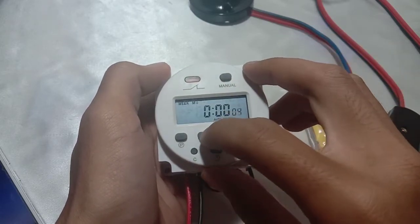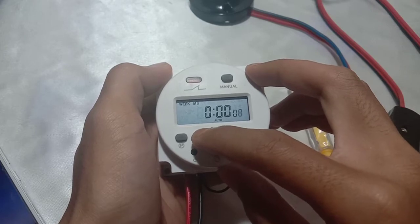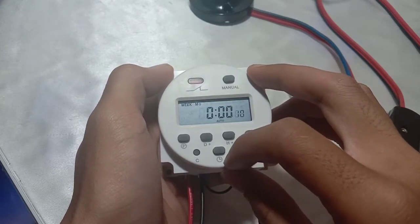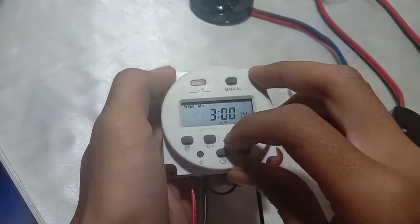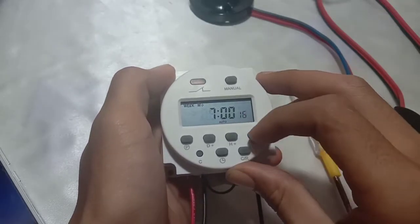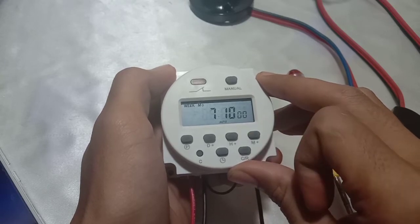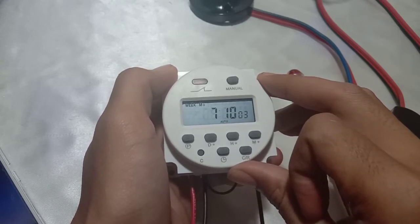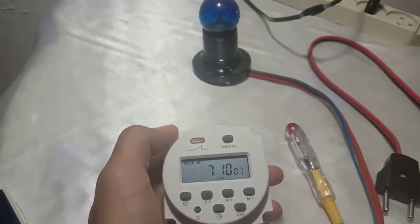You can press this one, C, it is for resetting. You can see, today I record it on Monday. So you can see up there if I press D, the day will be changed. Monday, okay, take Monday. Now I record at 7:10 minutes, okay, 7:10.